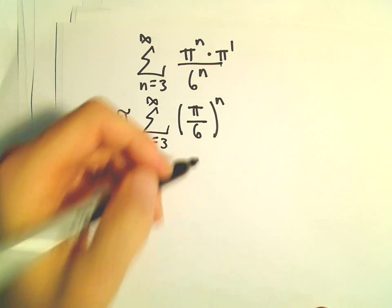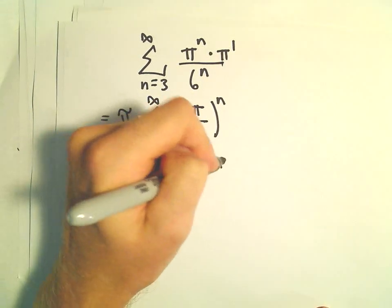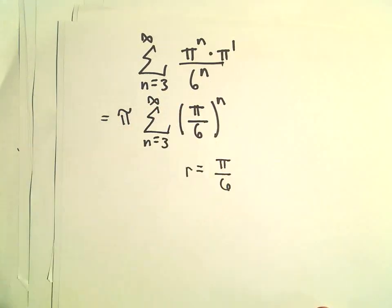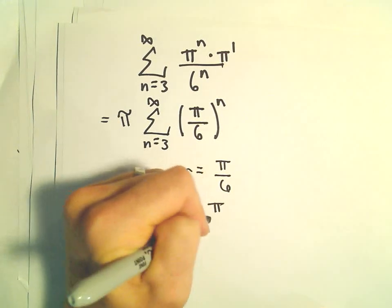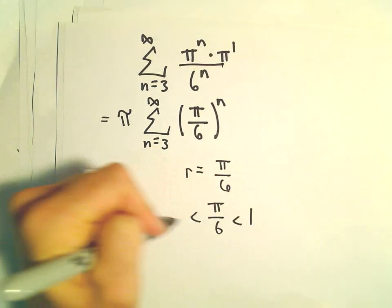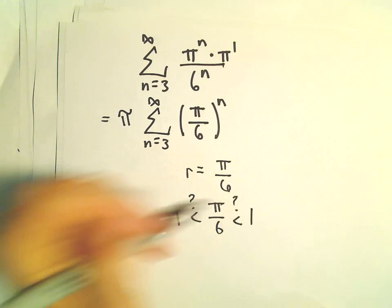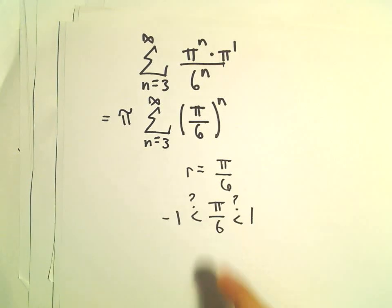So now I'm thinking, okay, I've got my geometric series where r equals pi over 6. And I'm thinking, pi over 6, is that in between positive 1 and negative 1? Well, pi is a little bit bigger than 3,